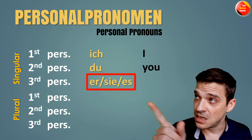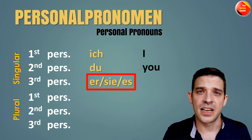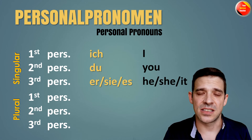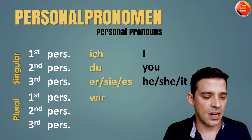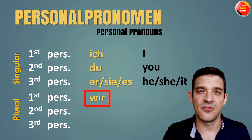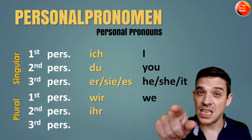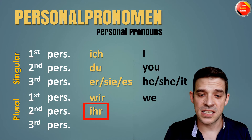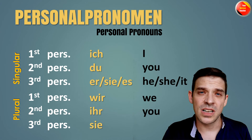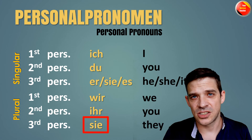Er, oder Sie, oder Es. In English: Er is 'He', Sie is 'She', and Es is 'It'. Plural! The first one is 'Wir' — Wir means 'We'. Next one is 'Ihr' — Ihr is 'you' in plural, meaning 'you guys'. And the last one is 'Sie' — Sie is 'They' in English.